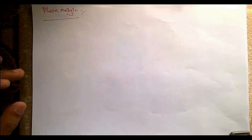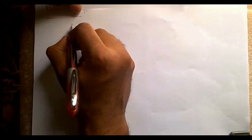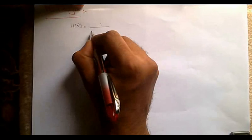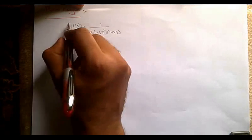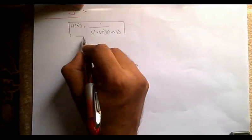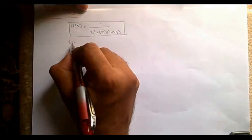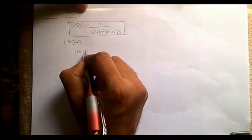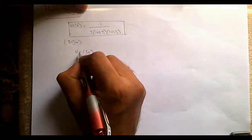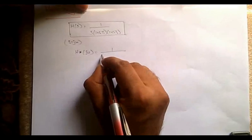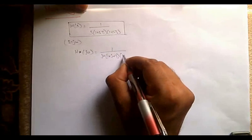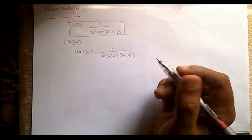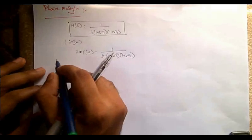Now, phase margin — how do we calculate phase margin for a given transfer function? We are given H(s) equal to 1 divided by s(1 + sT1)(1 + sT2). Substituting s = jω, H(jω) equals 1 divided by jω times (1 + jωT1)(1 + jωT2). First, we need to find the gain crossover frequency.